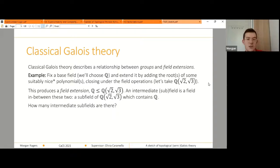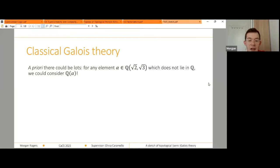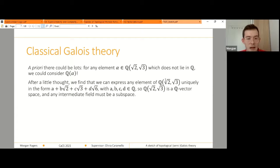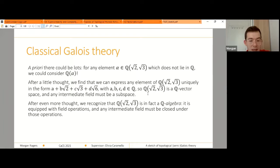So how many are there? If you are seeing this problem for the first time, you might think that there could be rather a large number, because there are lots of numbers in this larger field which aren't in the rationals. And so maybe we could just add any of those and we'd get some field, which makes it sound like there could be infinitely many. If we structure that thought a little bit, we observe that we can express any element of this larger field in a fixed form.